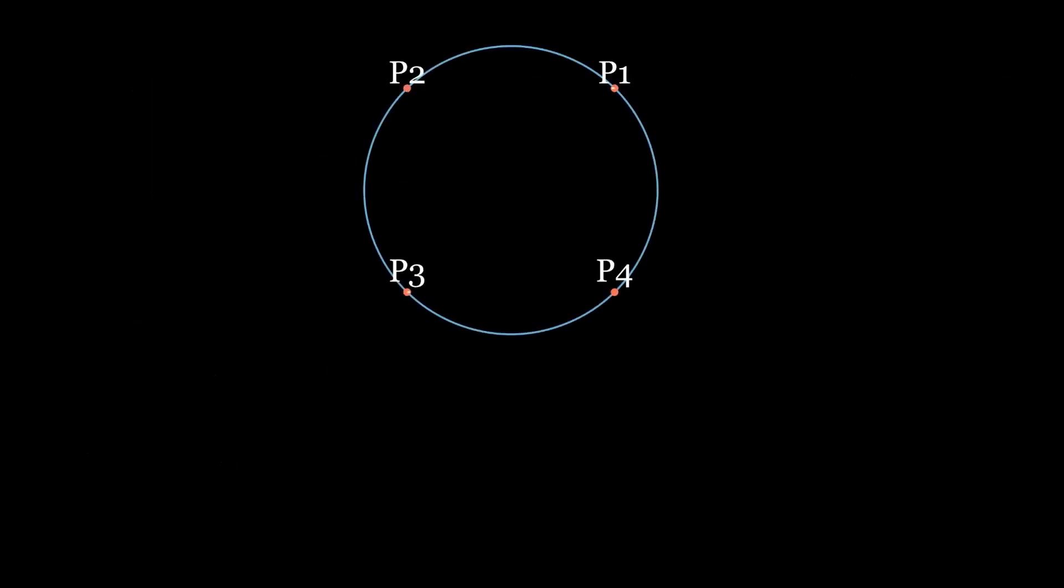A pair of chords is determined by four points on the circumference. Let's label the points as P1 through P4. We have three cases. Either P1 gets connected to P2, or P1 gets connected to P3, or P1 gets connected to P4.